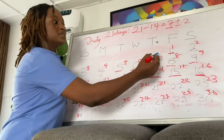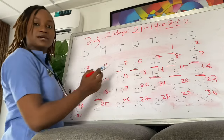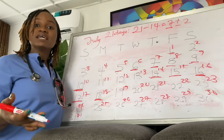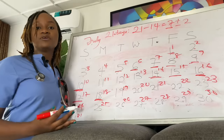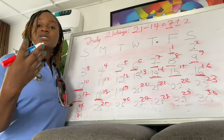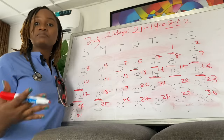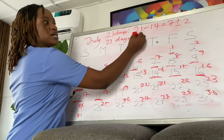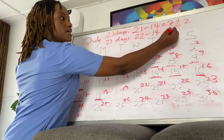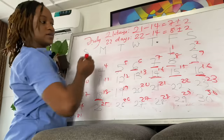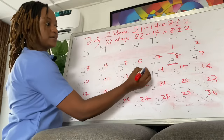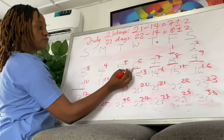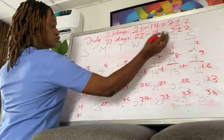Her fertile window runs from Day 1 to Day 9 of her cycle. For women with shorter cycles — like 21, 22, 23, or even 25 days — they can actually get pregnant while seeing their period, because their fertile window still falls within their period days. For a 22-day cycle: 22 minus 14 equals 8, plus or minus 2. Ovulation could be on Day 6, 7, 8, 9, or 10. The fertile window runs from Day 2 to Day 10.